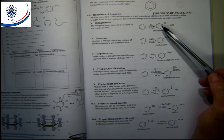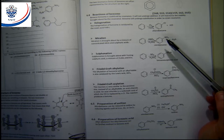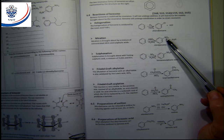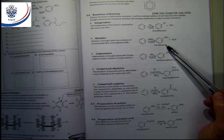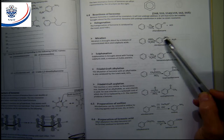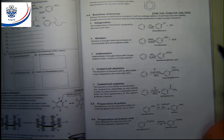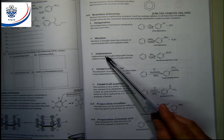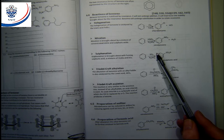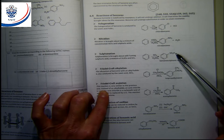Nitration: treat benzene with nitric acid and sulfuric acid (used as a catalyst). The NO2 group from the nitric acid substitutes one hydrogen, giving nitrobenzene. Sulfonation: treat benzene with fuming sulfuric acid, which is a mixture of sulfur trioxide (SO3) and sulfuric acid. This attaches an SO3H group to benzene, producing benzene sulfonic acid.